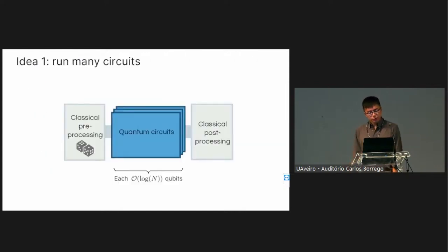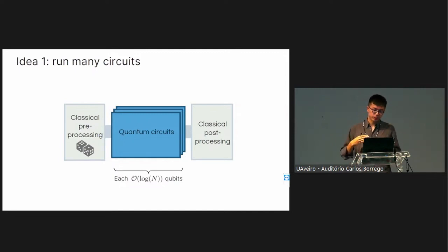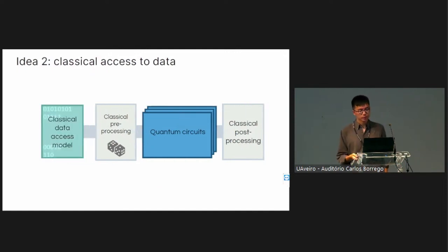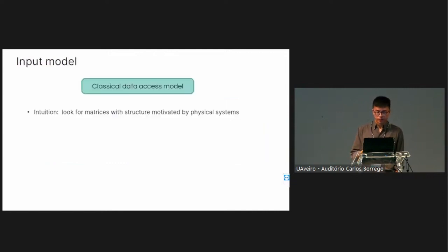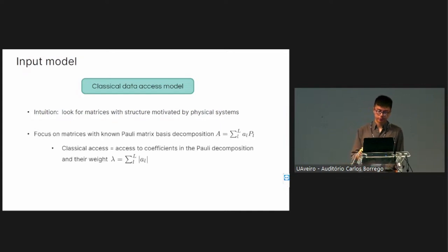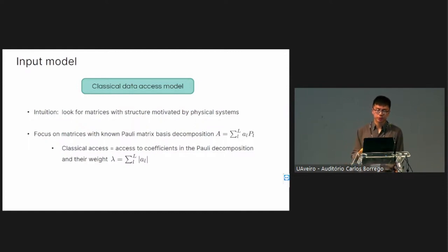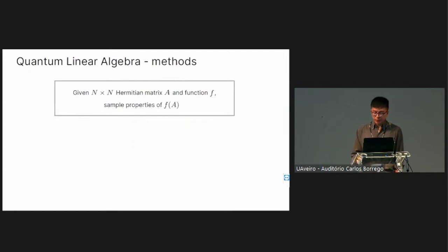We might ask for something in between: no extra qubits but also no heavy error dependence in gate depth. Our first idea, similar to other early fault-tolerant approaches, is to use the power of running many quantum circuits, restricting each circuit to O(log N) size. The second idea is to remove quantum access to data and replace it with classical access, removing all extra resource requirements. We focus on matrices with a known Pauli decomposition, where classical access simply means knowing the coefficients and their l1 norm.